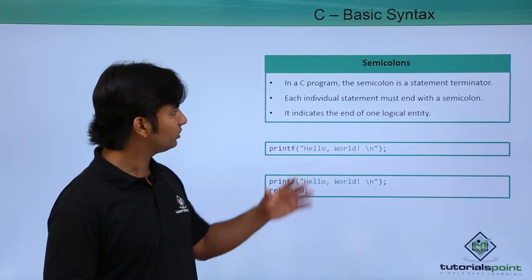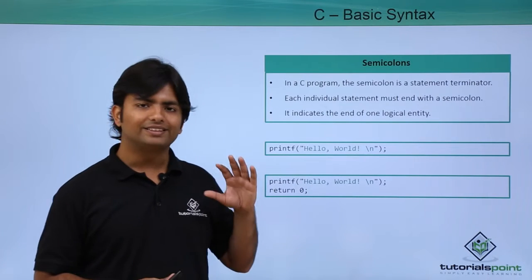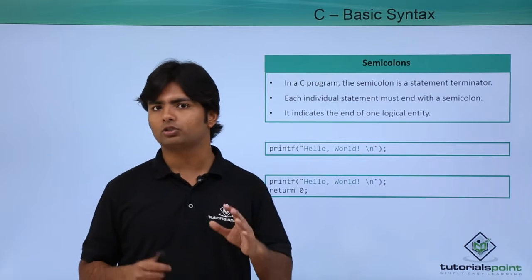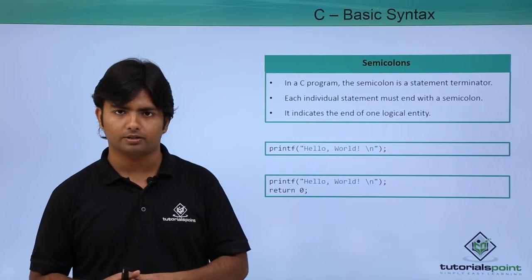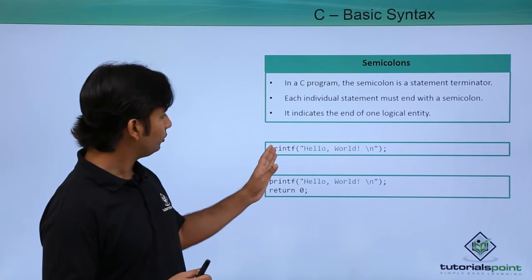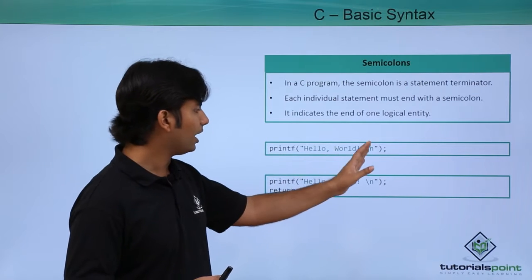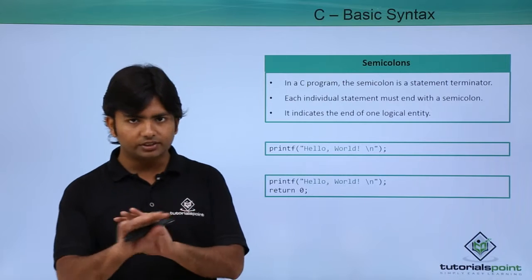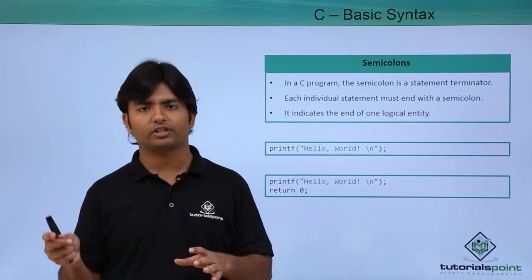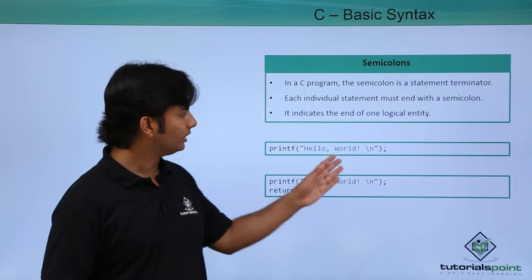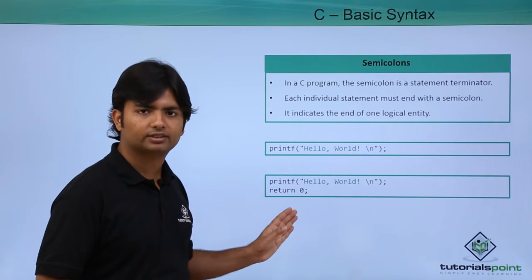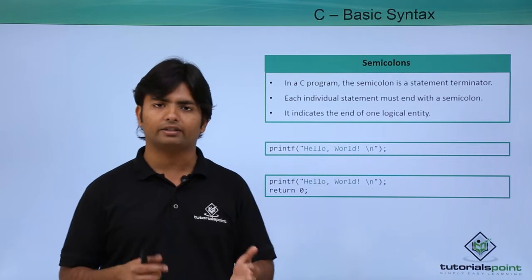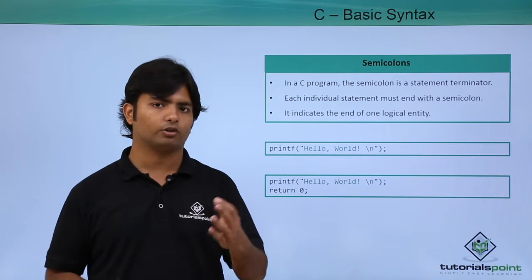Let's get started with semicolons first. The semicolon is used to terminate a statement. As you can see, after printf I have terminated that with a semicolon. That means this is the end of this command. After that, whatever you write, whether in the same line or in the next line, will be treated as a different command for the compiler.